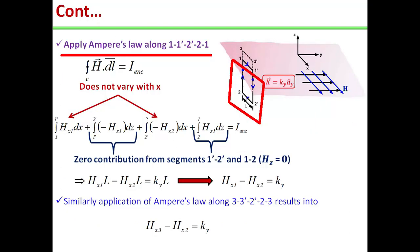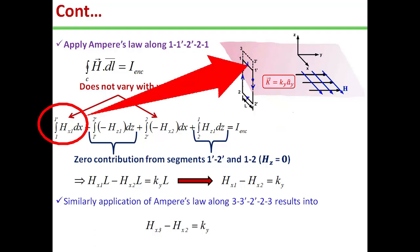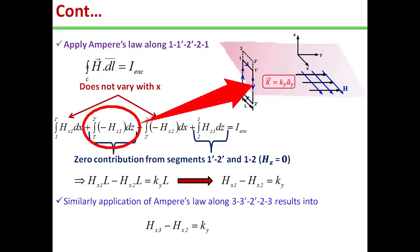Now we will apply Ampere's law along 1-1'-2'-2-1. Ampere's law says that line integral H·dl over contour c is equal to I enclosed. So for this path, that means 1-1'-2'-2-1, we can write H·dl for this path as integral from 1 to 1' H_x1 dx plus integral 1' to 2' minus H_z1 dz.